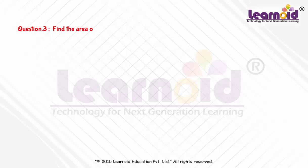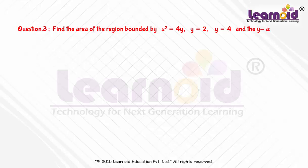Find the area of the region bounded by x² = 4y, y = 2, y = 4, and the y-axis in the first quadrant.